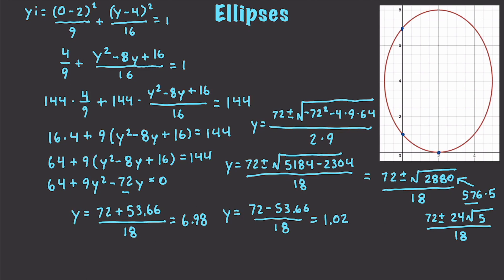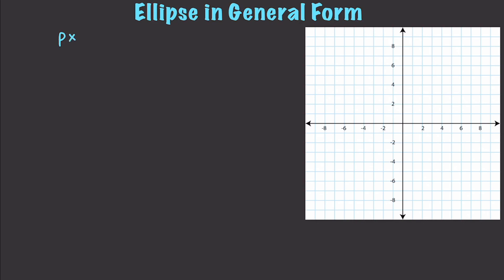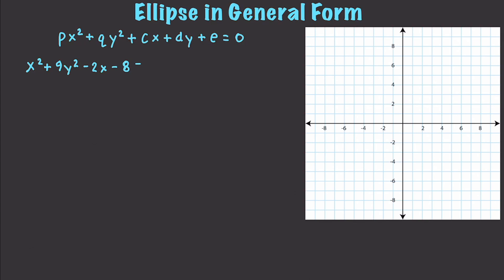Now I want to show you how to graph an ellipse when it is given in general form. The general form for an ellipse is px squared plus qy squared plus cx plus dy plus e equals 0. We'll solve one of these step by step using techniques learned throughout this tutorial — this is why conic sections are normally covered last, as they require a lot of what you've already learned in algebra.